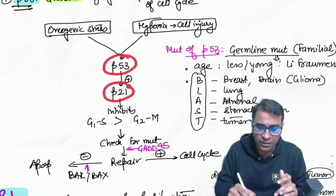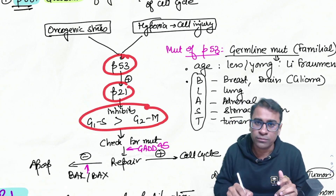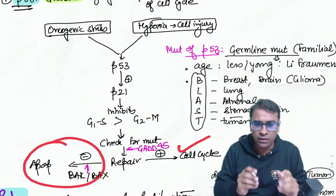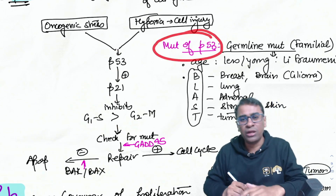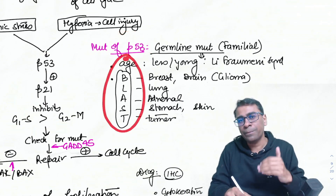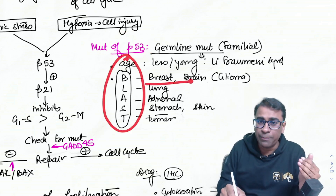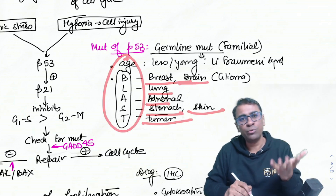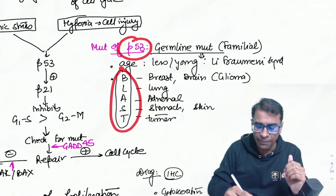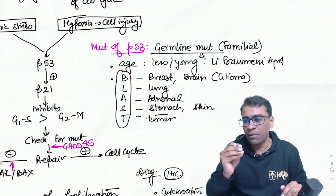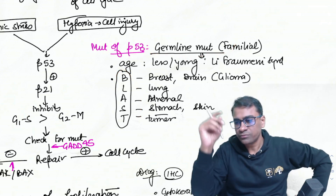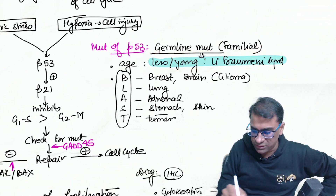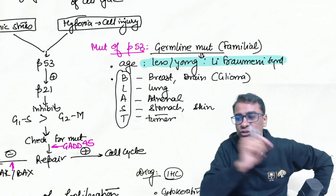P53 acts: father tells mother, mother stops the cell, repair occurs; if not possible, cell death. The mnemonic for tumors caused by loss of P53 is BLAST — Breast, Brain, Lung, Adrenal, Stomach/Skin, Tumor. If there is a germline loss or familial mutation of P53, it is called Li-Fraumeni syndrome.